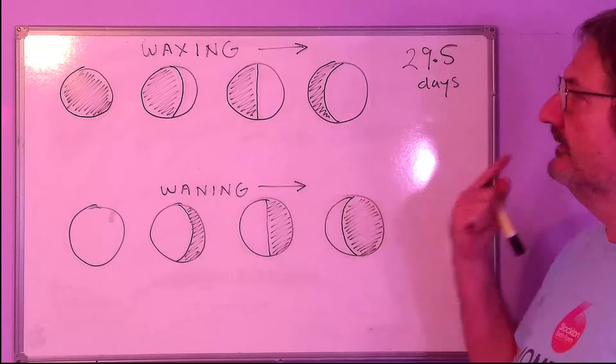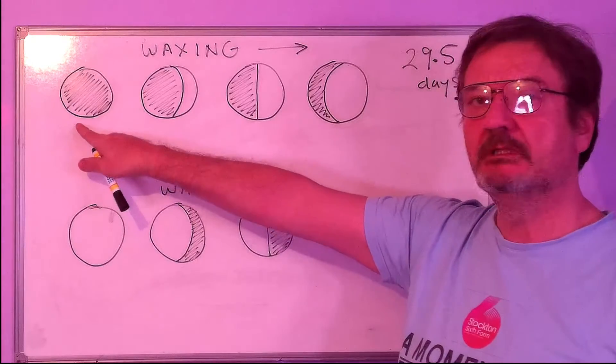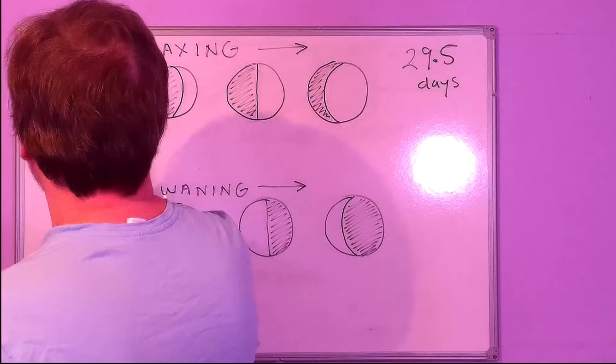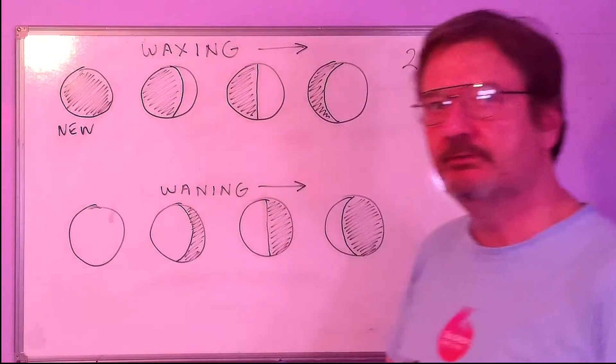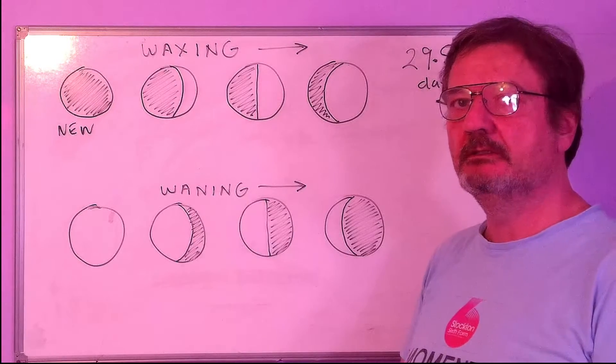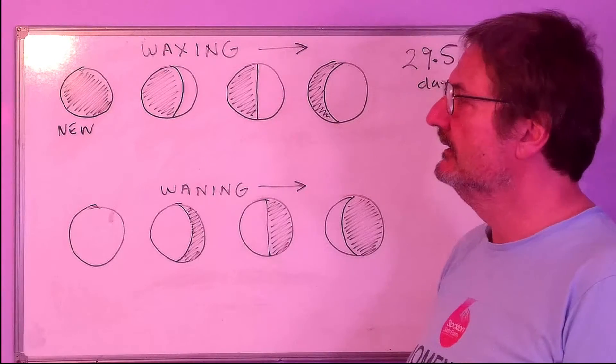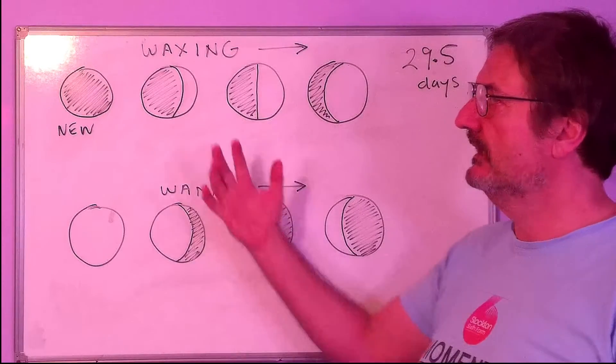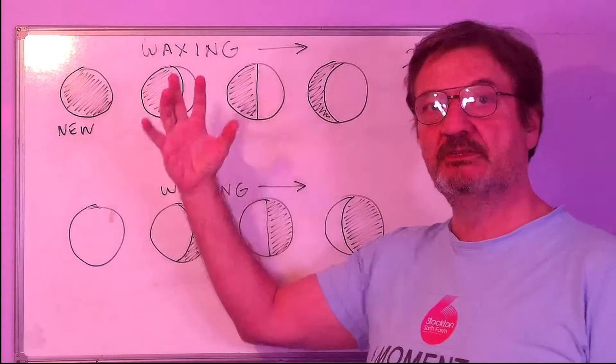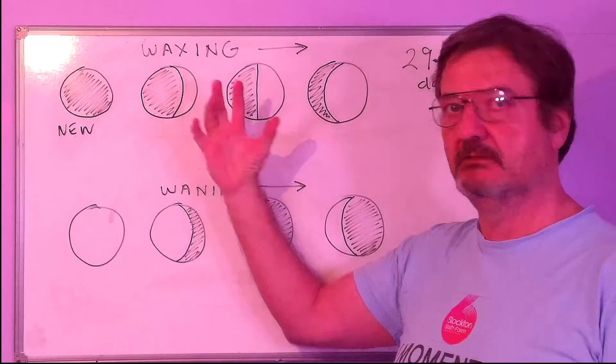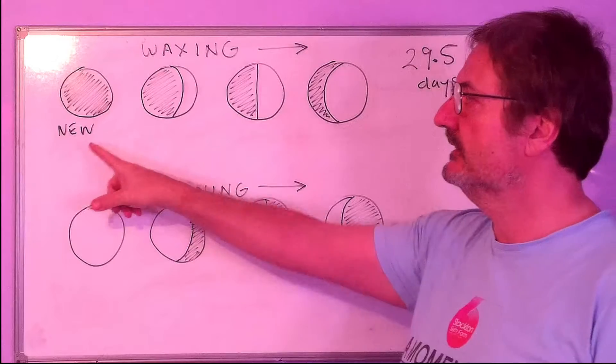So let's go through them. The first one is when we can't see anything, and that's called a new moon. Officially, that's the beginning of the cycle, a new moon. If you went outside and there was a new moon, you wouldn't be able to see it. All the sun's light is shining on the side of the moon which is facing away from us, so we can't see a thing. That's a new moon.